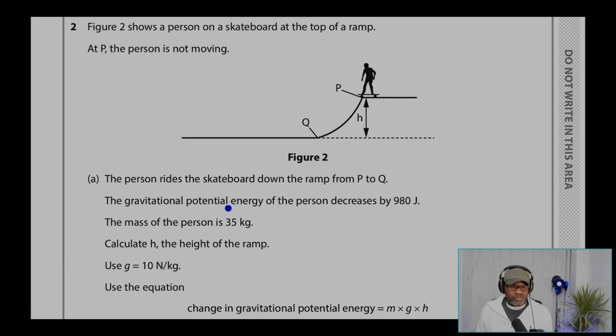The gravitational potential energy of the person decreases by 980 joules. The mass of the person is 35 kilogram. Calculate H, the height of the ramp. Use G equals 10 newtons per kilogram. Use the equation.